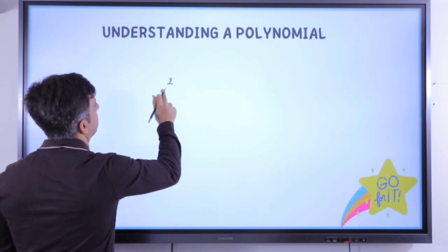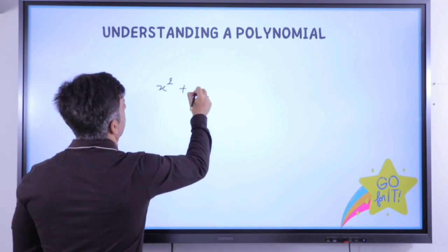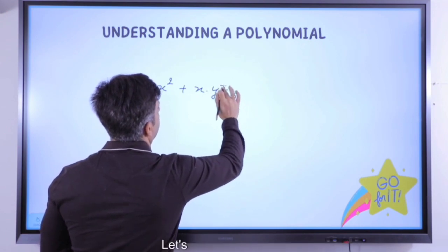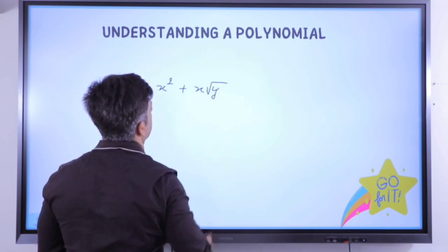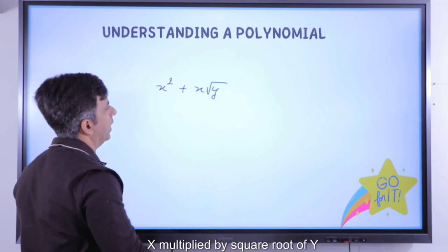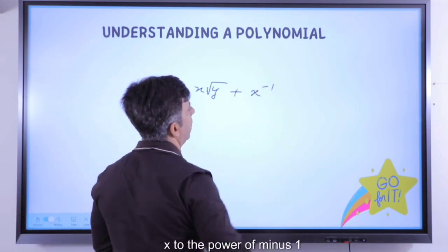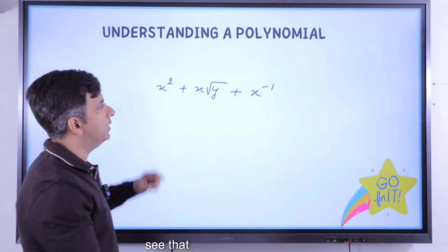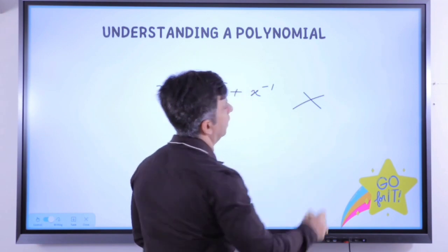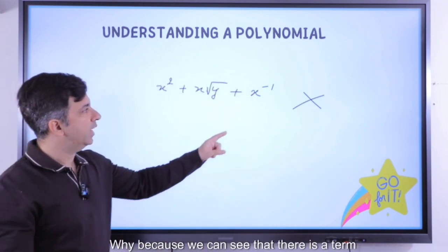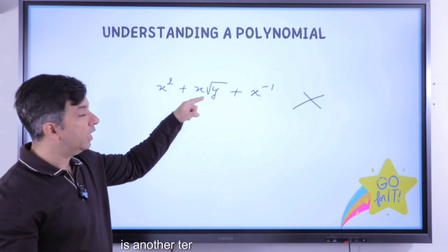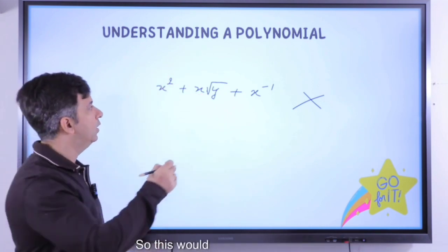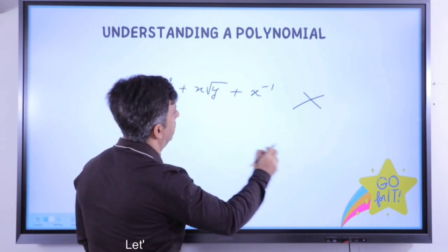Now, if someone gives me the expression x² + x·y^(1/2) + x^(−1) — that is, x times the square root of y plus x to the power minus 1 — by just looking at this we can see that this is not a polynomial. There is a term involving x^(−1) and another term involving y^(1/2), and square root means y to the power 1/2. So this would be outright rejected.